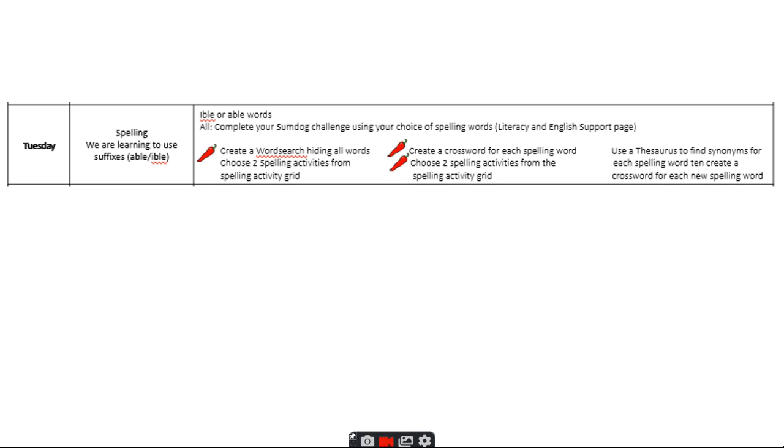For one chili, create a word search hiding all of your words and choose two spelling activities from the spelling grid. Two chili - create a crossword for each spelling word. So a crossword, you're giving people clues for the word, you're not just hiding the word. Choose two spelling activities from the spelling activity grid.